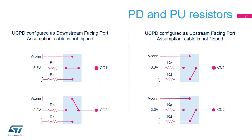The UCPD is configured by software as either a downstream facing port or an upstream facing port. In DFP mode, assuming no cable flip, CC1 is connected to RP. The value of RP indicates the default power that the DFP can source on VBUS. In DFP mode, CC2 is connected to VCONN, which is a 5-volt 1.0-watt power supply used to power devices within the plug needed for electronically marked cables and VCONN-powered accessories. In UFP mode, CC1 and CC2 are connected to RD, which is a 5.1 kOhm resistor. Since the UCPD supports both DFP and UFP operation, internal switches select the current configuration.